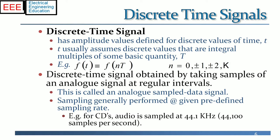For example, for CDs, audio is sampled at 44.1 kHz, that is 44,100 samples per second.